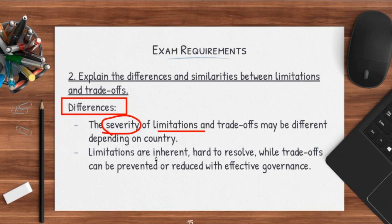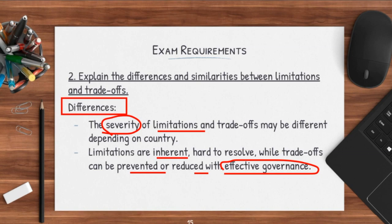One more key difference: limitations are inherent and hard to resolve, while trade-offs can be prevented or reduced with effective governance. Limitations are bound to be there — every country will always have limitations and it's extremely hard to resolve, because for an LDC with very limited financial resources, without a strong government to bring in trade, it's going to be extremely difficult for the country to ever break out of this financial curse. However, trade-offs can actually be resolved more simply — for example, if my country is facing a trade-off in the environmental aspect, all I need to do is employ technology or reduce my economic growth slightly to manage my environmental impacts, and sustainable development can be achieved. But this can only be done with effective governance.